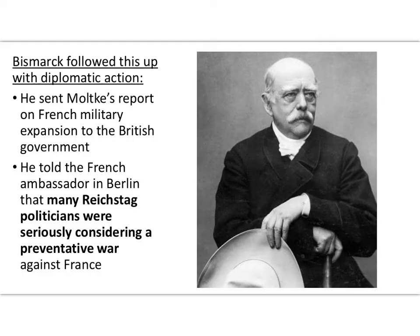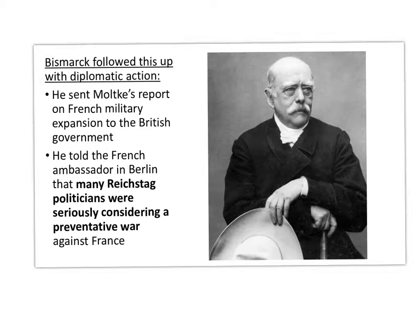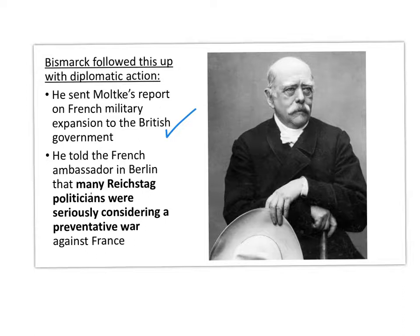He didn't want to go to war — which is what von Moltke wanted. Bismarck did follow up with diplomatic action through usual channels: he sent von Moltke's report about French military expansion to the British government, since Britain was France's traditional enemy, trying to further isolate France by alarming the British about French military intentions. He also told the French ambassador in Berlin that many Reichstag politicians were seriously considering a preventive war. It was a multi-pronged attack — isolating France and putting pressure on them to abandon their policy, through both diplomatic isolation and inflaming popular opinion.